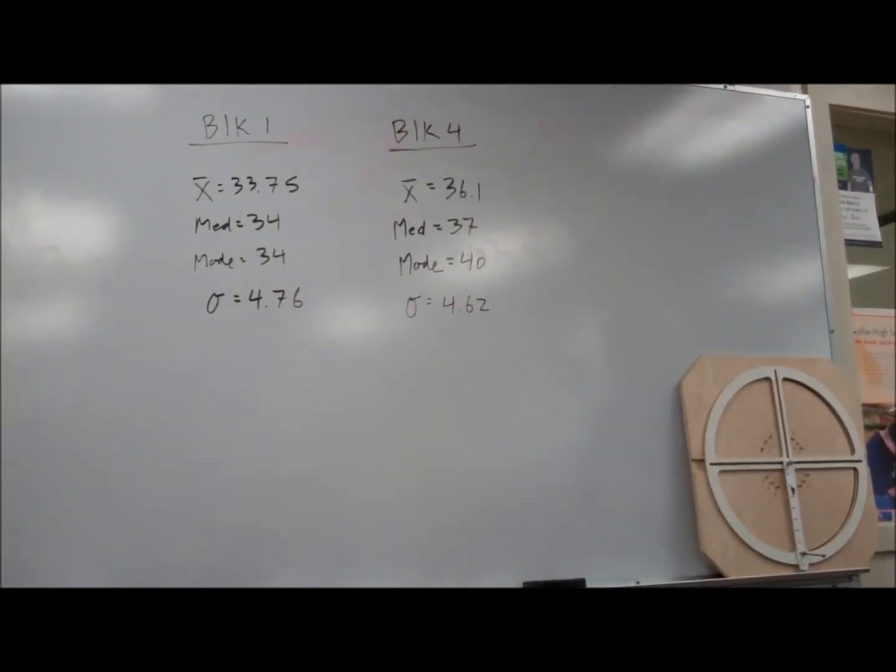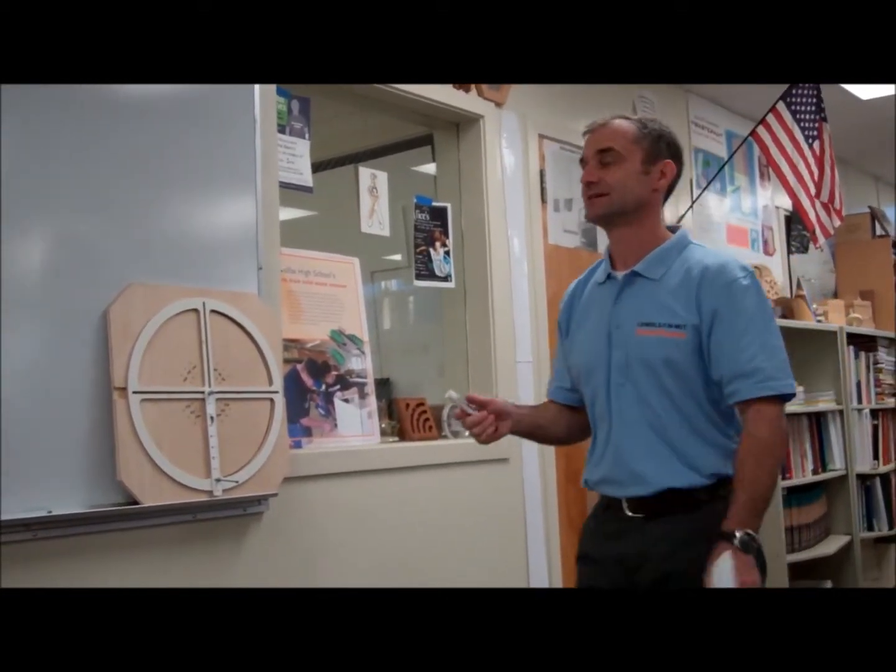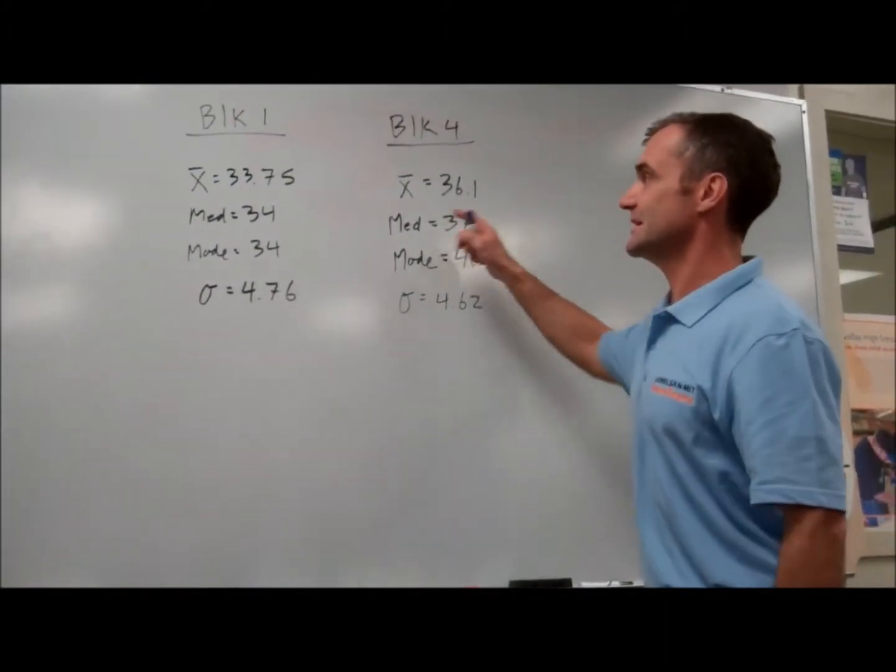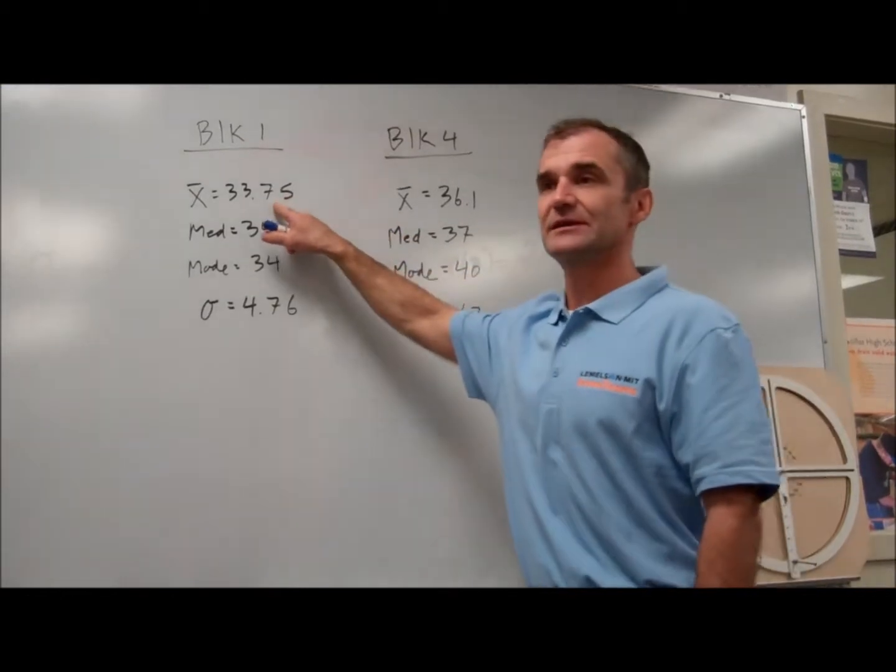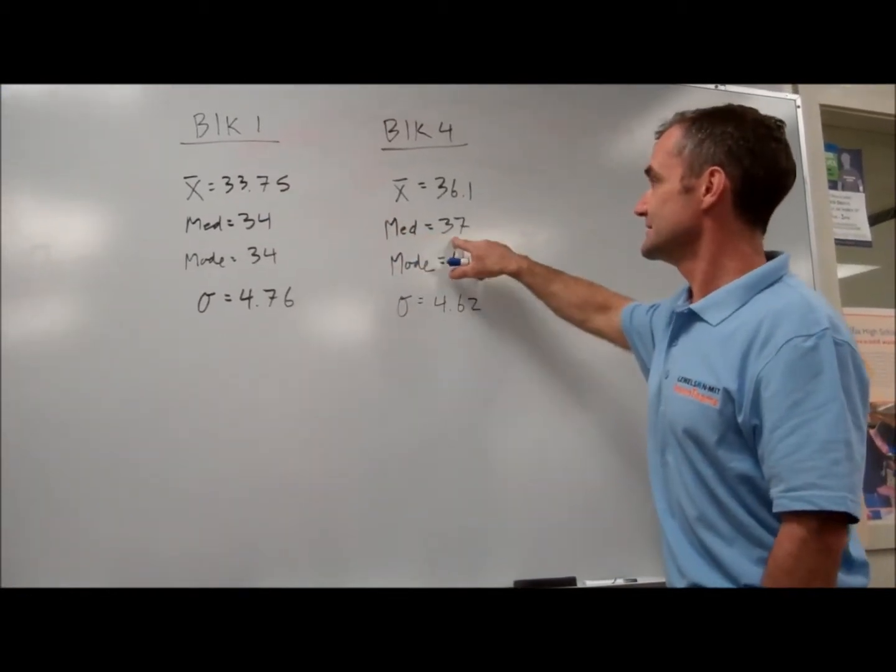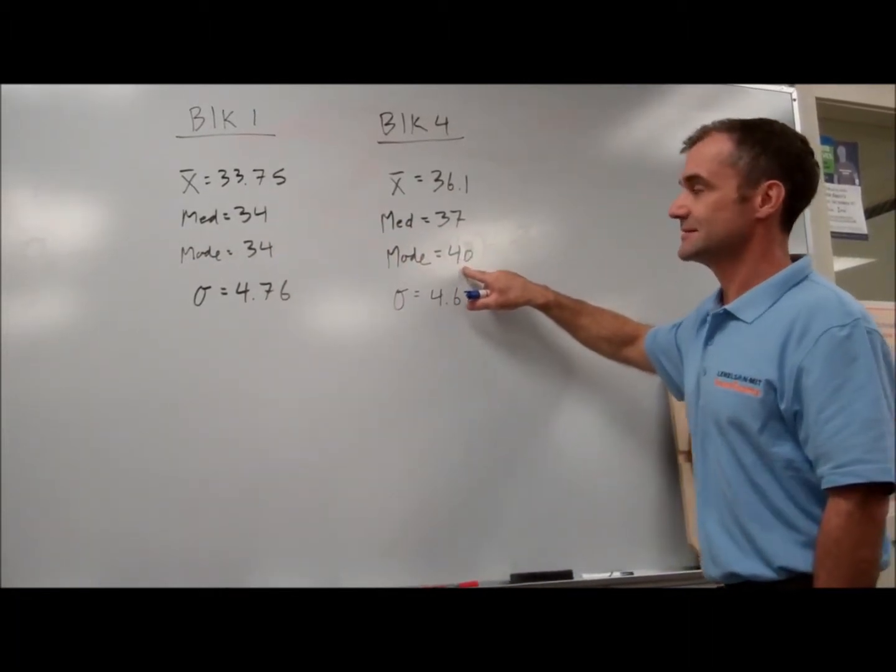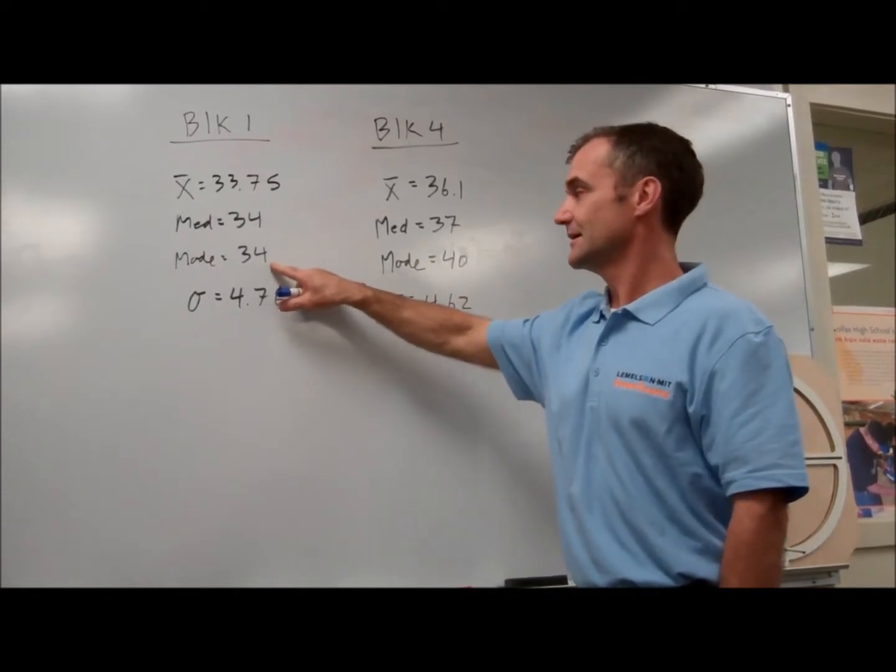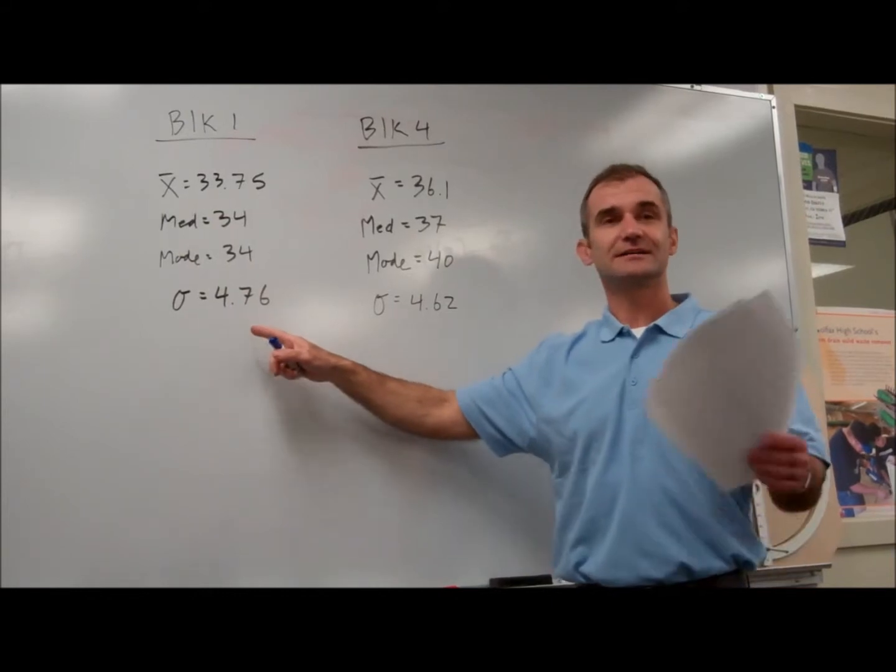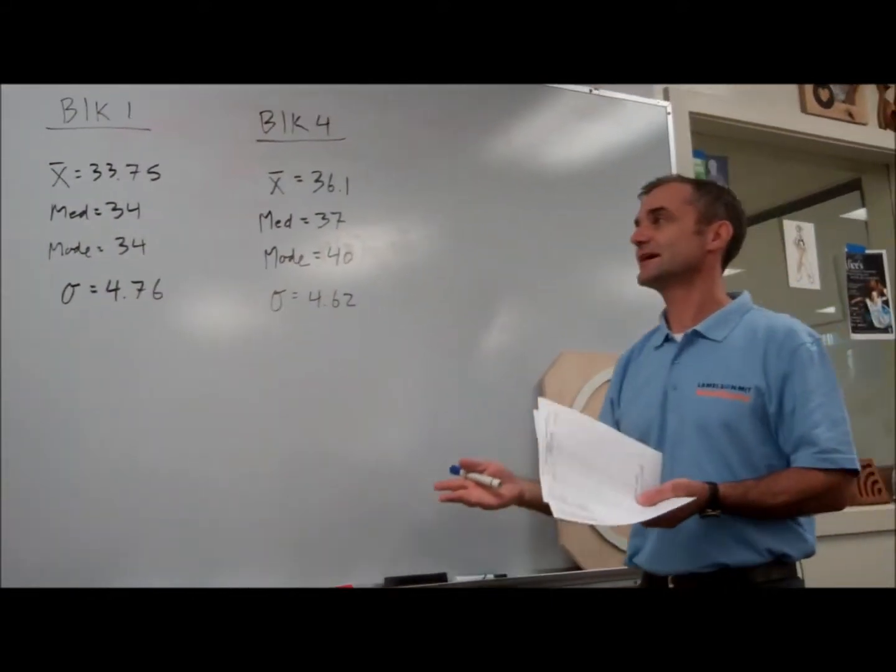So if I were to analyze these stats and compare the two different classes, 36 is 90%, so this is an A, and this is a B. This is an A, this is a B, this is an A plus, and this is a B. This has a little less variation than this. So identical tests, pretty much identical preparation, everything's kind of the same.